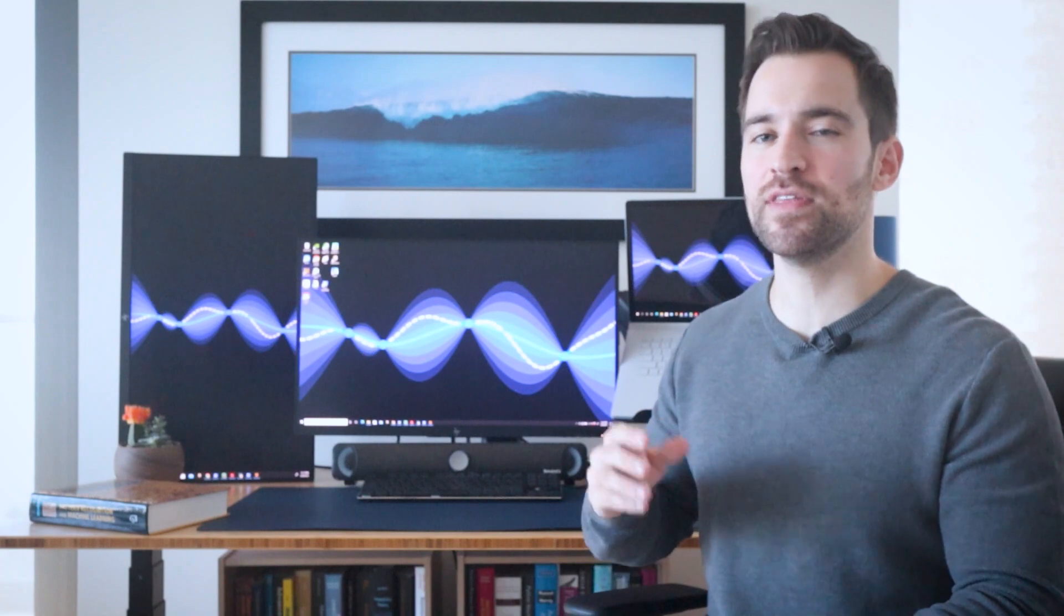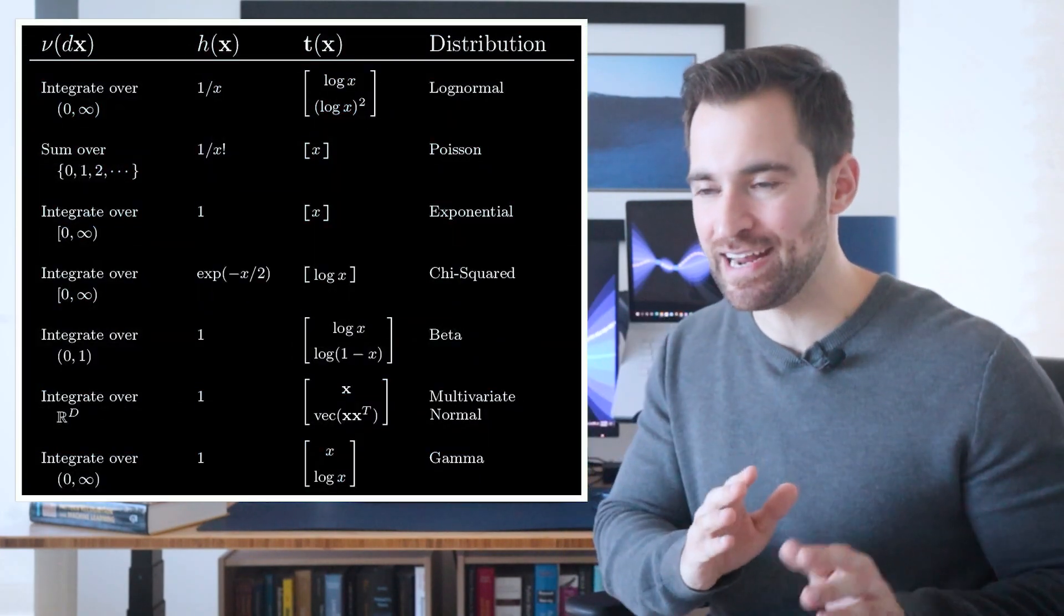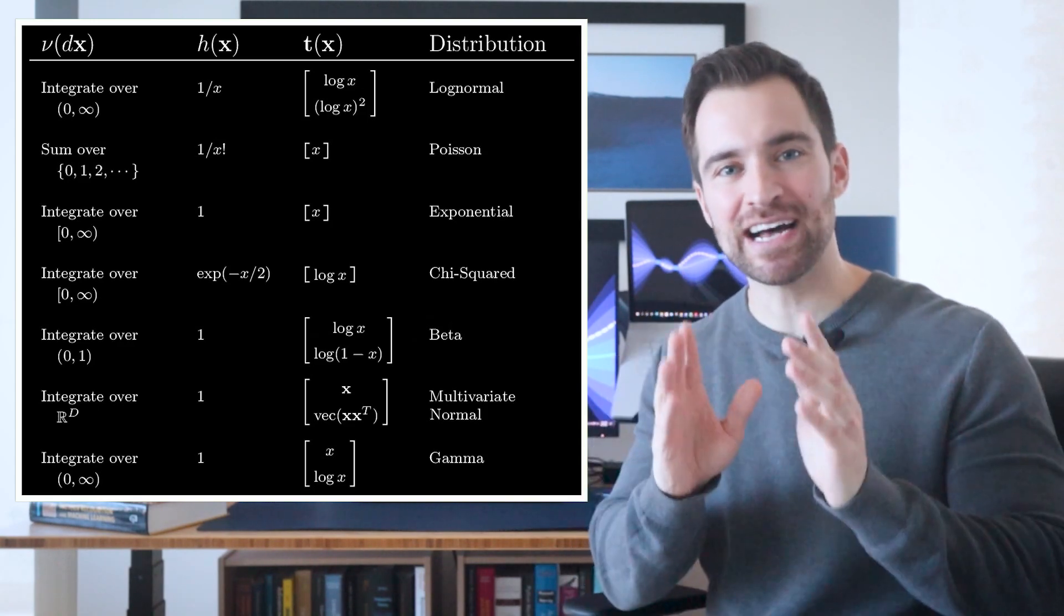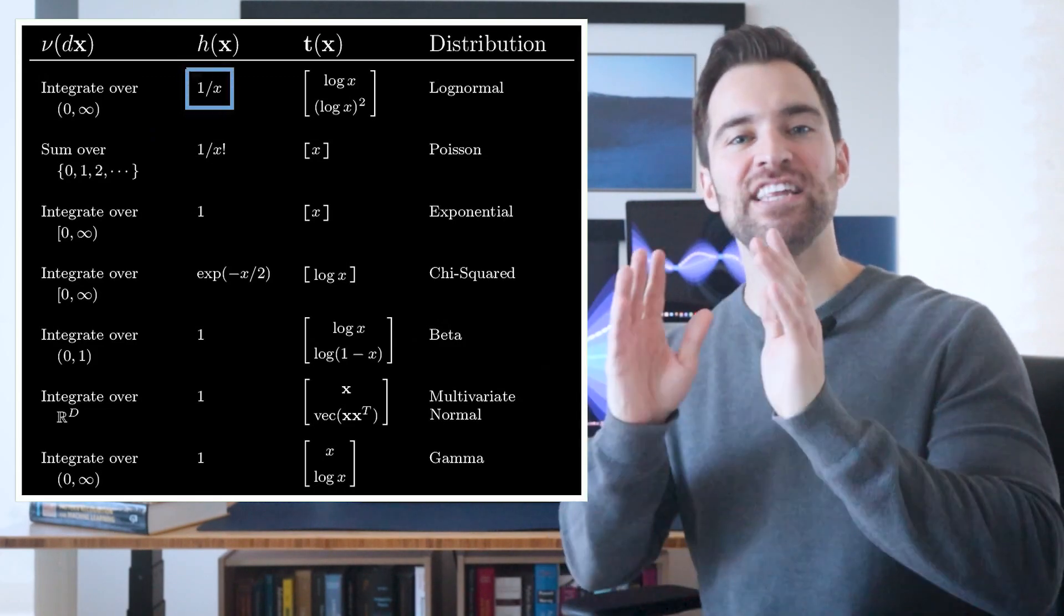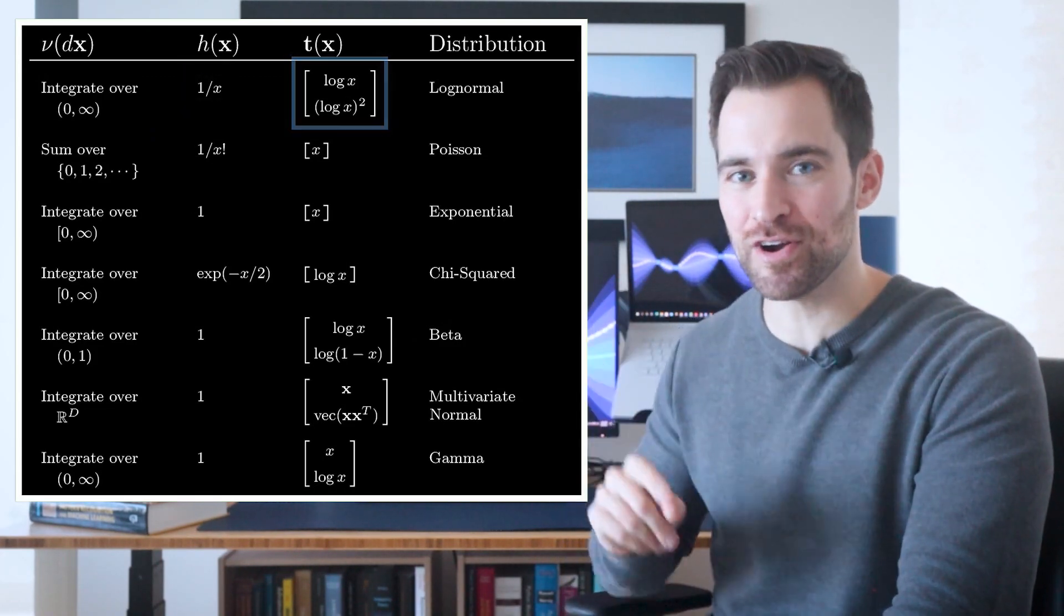At this point, I could continue on with another example. But I think a better approach is to show you the breadth of the exponential family. Here's a partial list of the choices you could make and the distributions you'd get. For example, if you integrate over the positive part of the real line, and you make h of x equal to 1 over x, and the sufficient statistics are log x and the square of log x, then you'd get the log normal.